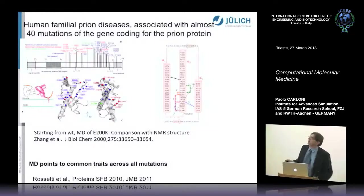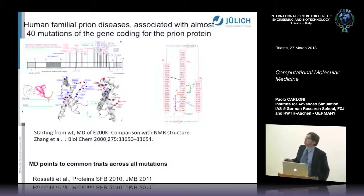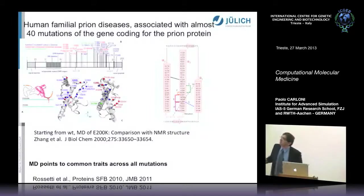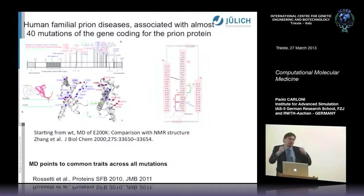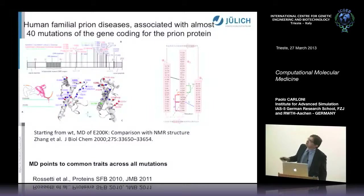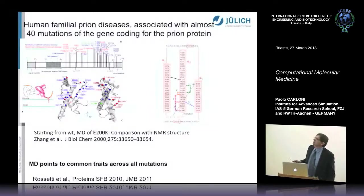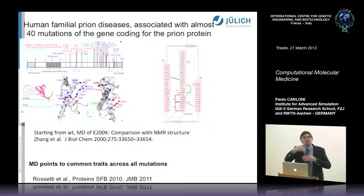They have also looked at so-called protective mutations that seem to prevent the disease from happening. To make a long story short, we see that these mutations very intriguingly have the same effect on the structure. Wherever they are located, they seem to make the structure much looser. The interaction between the three helices of this protein becomes looser during our molecular simulations.